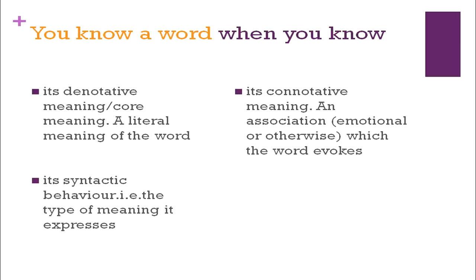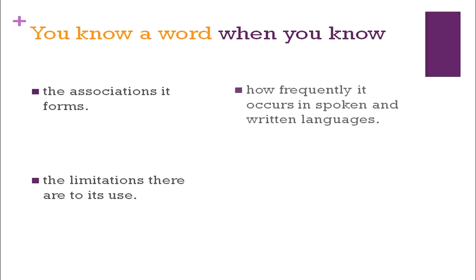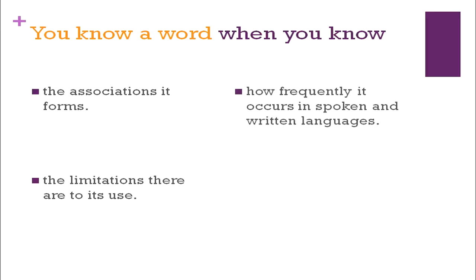You know a word when you know its denotative meaning — the core, literal meaning of the word. Generally we think vocabulary is only word meanings, but that is not so. It has connotative meaning also — an association. Some meanings are associated meanings, emotional or otherwise, which the word evokes. Then its syntactic behavior — the type of meaning it expresses. You know a word when you know the associations it forms, the limitations on its use, and how frequently it occurs in spoken and written language. Some words we use quite a lot; some we use rarely.